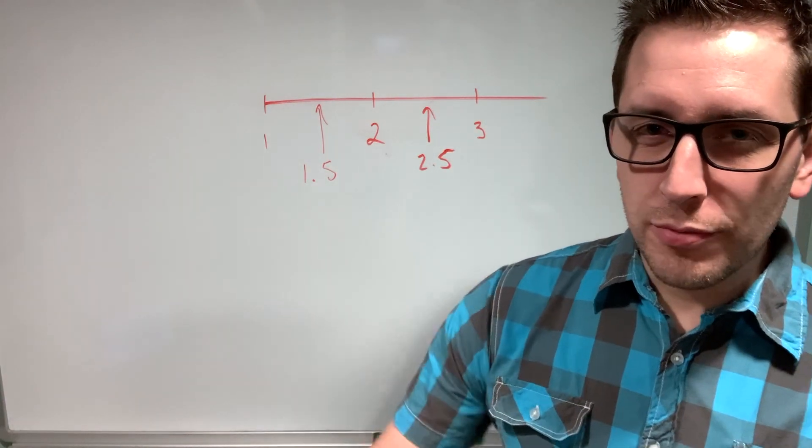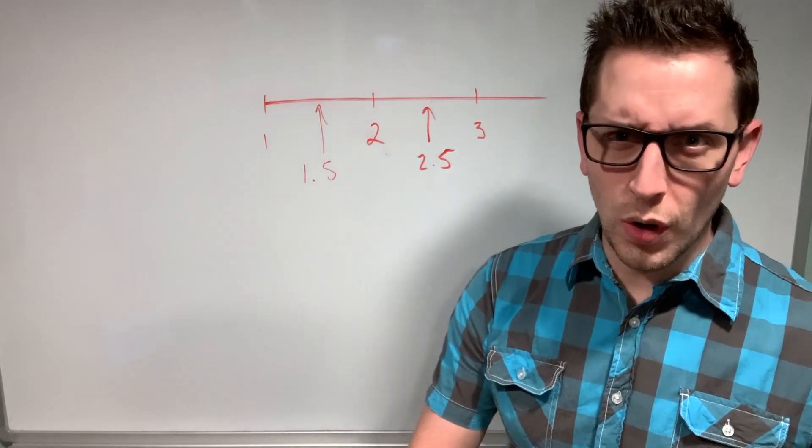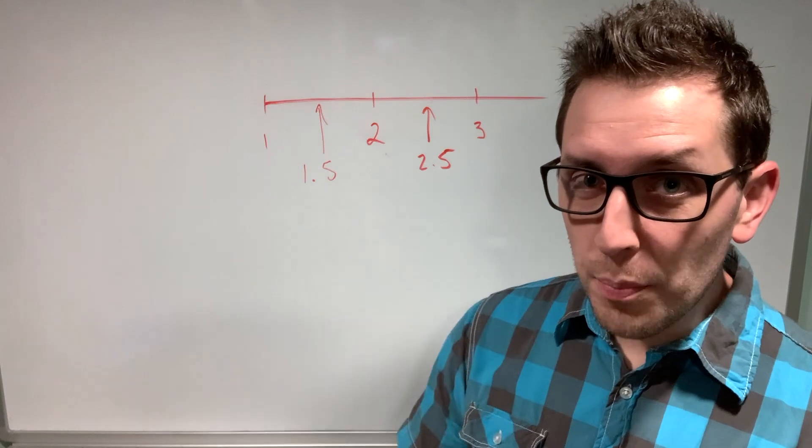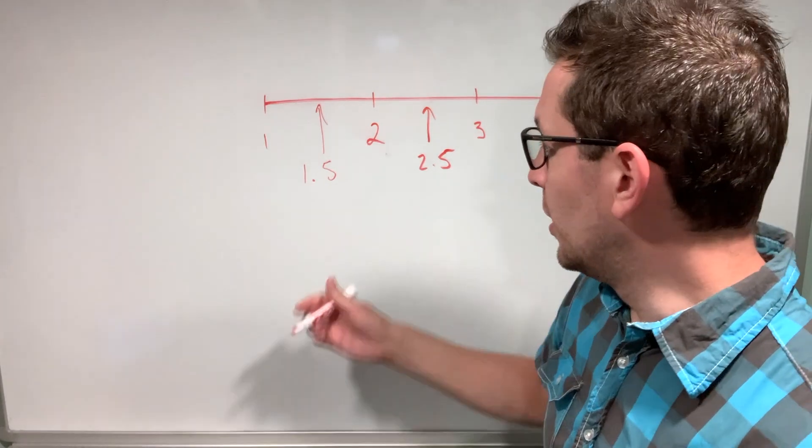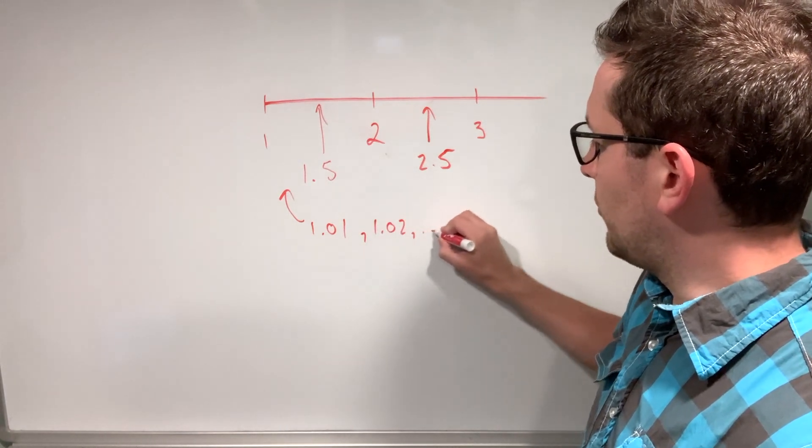But what would happen if we took this one step even further? Let's say we look at numbers between one and 1.5. If I go up by steps of 0.01, I would have 1.01, 1.02, and so on.